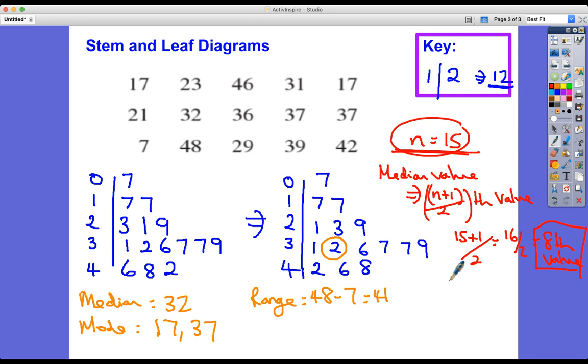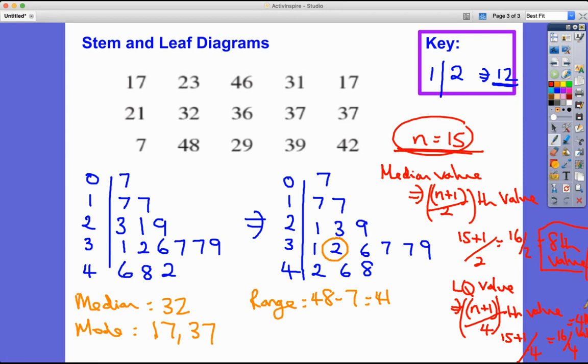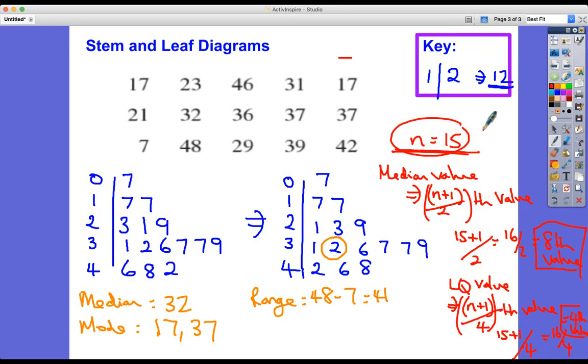I could even find the interquartile range using this same idea. I've got 15 values. The lower quartile value - what I do is I take n plus 1, but this time I'm finding a quarter of the way through the data instead of halfway through. It's the n plus 1 over 4th value, which would be 16 over 4, which is the 4th value. The 4th value is - count through 1, 2, 3, 4 - is 21. Lower quartile is 21.